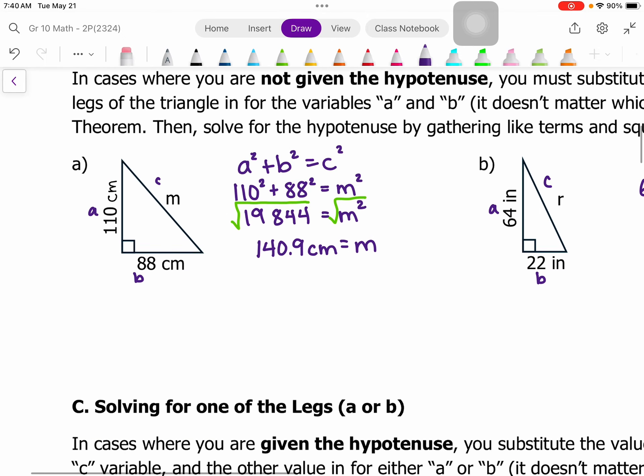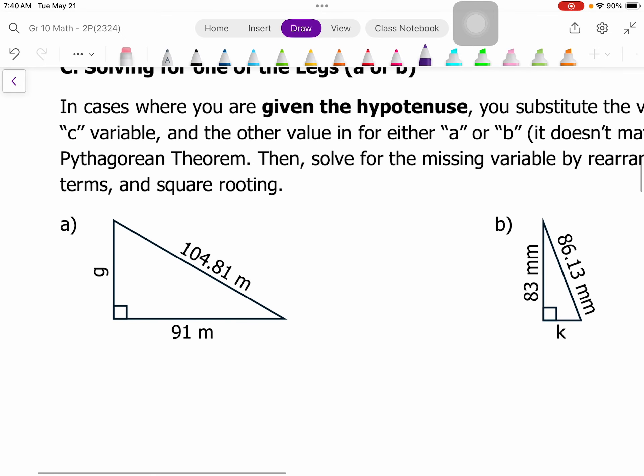Now if we know our hypotenuse and we need to find one of the other sides, we'll take a look at how we rearrange our formula for that. So here we have a, b, and c.